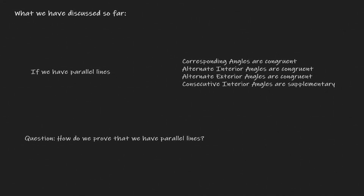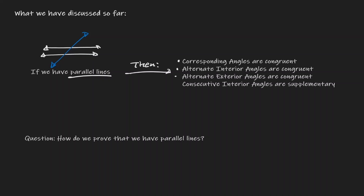What have we discussed so far? So far, this is what we have said. If we have a pair of parallel lines intersecting with a transversal, these are the different conclusions we got: corresponding angles are congruent, alternate interior angles are congruent, alternate exterior angles are congruent, and consecutive interior angles are supplementary.